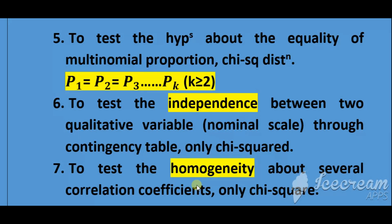An important point: chi-square distribution is unique in that it is both parametric and non-parametric. Under the goodness-of-fit test, chi-square distribution is non-parametric. Similarly, for the sixth point — testing independence between two categorical variables — since we do not assume any specific distribution before the test, that test is also non-parametric.